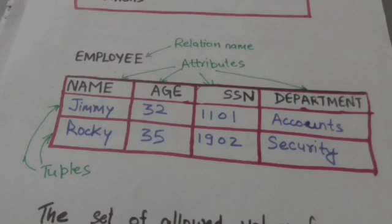In relational model terminology, the table is called a relation, the row is called a tuple, and the column headers are called attributes.